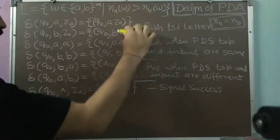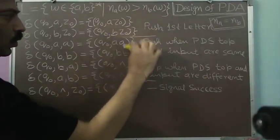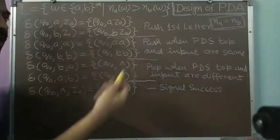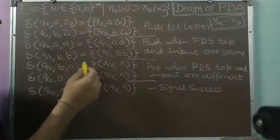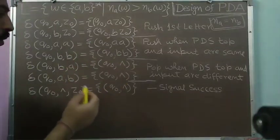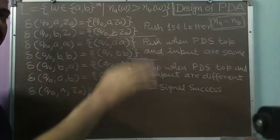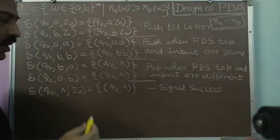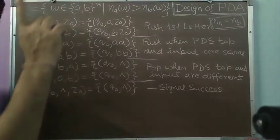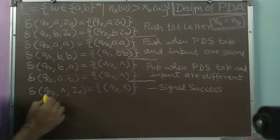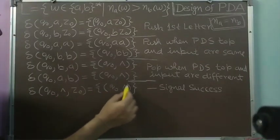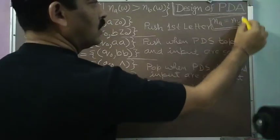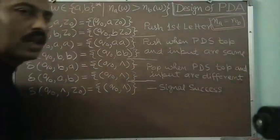The first symbol is pushed by one of the first two transitions, then these four transitions take over and through multiple application we process our string. If the string contains equal numbers of a's and b's, ultimately all pushed symbols get popped. When our string finishes we get z0 on top of the pushdown store. So in state q0 we take a null move and remove z0 to signal success. This was the strategy for when the number of a's equals the number of b's.